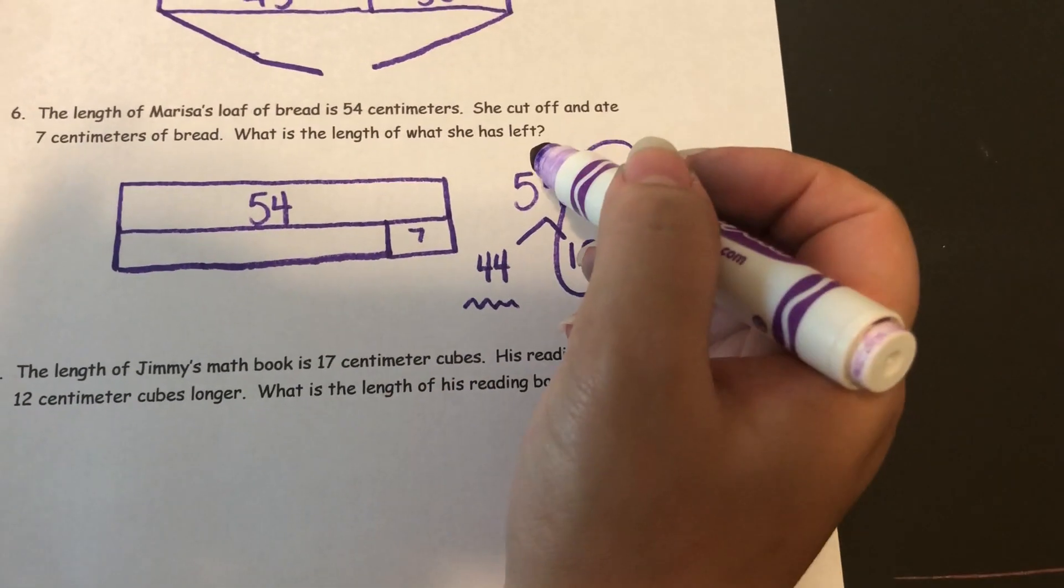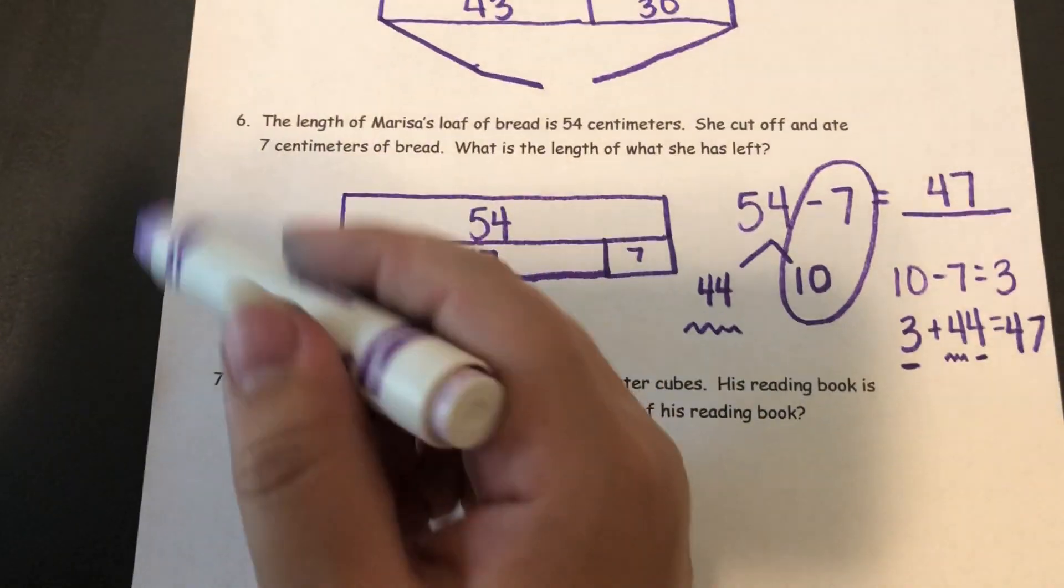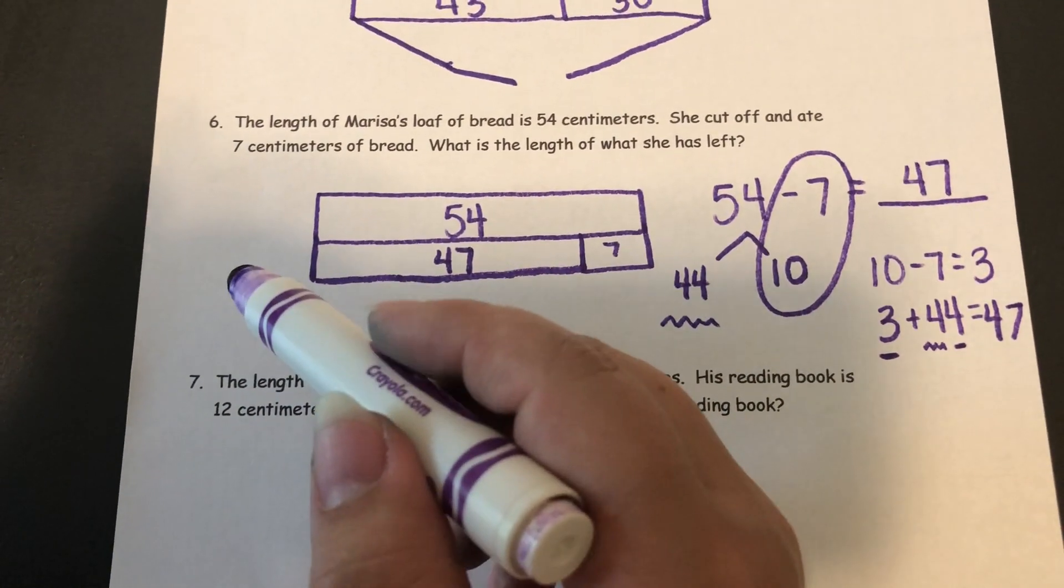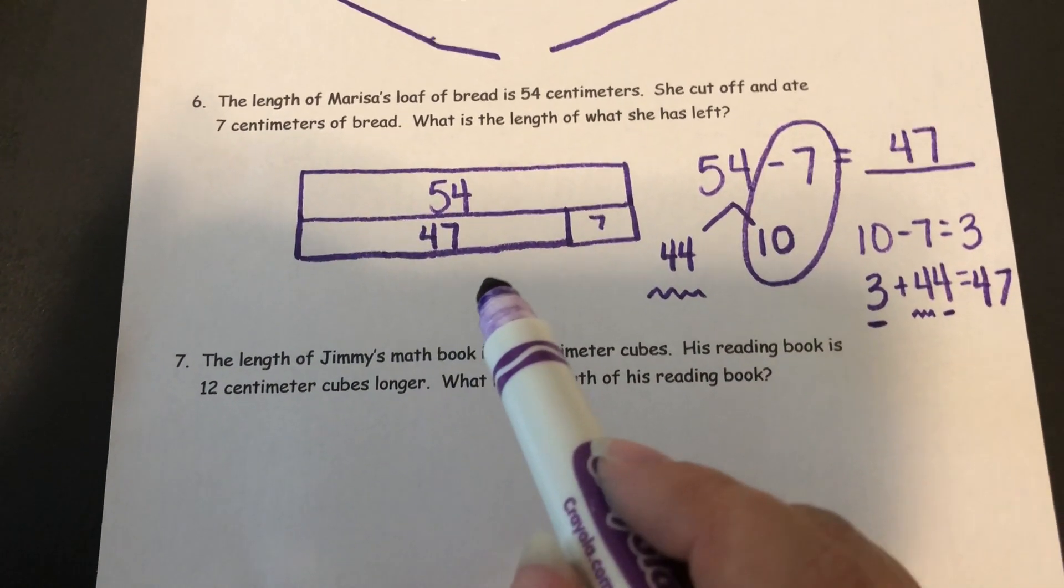So I know she has 47 centimeters left. And I could even write that in a statement. I could say, Marissa has 47 centimeters of bread left.